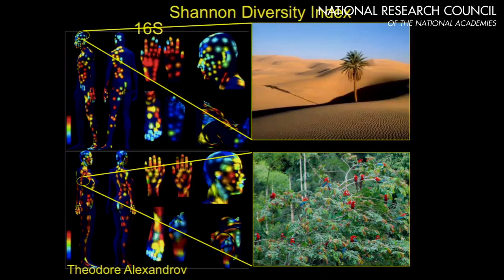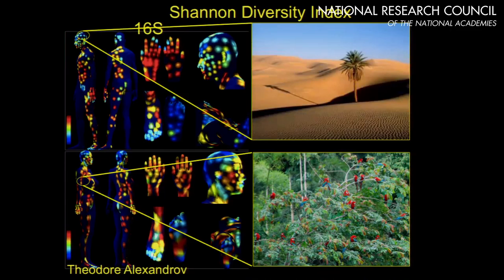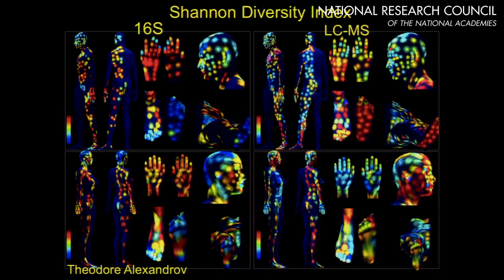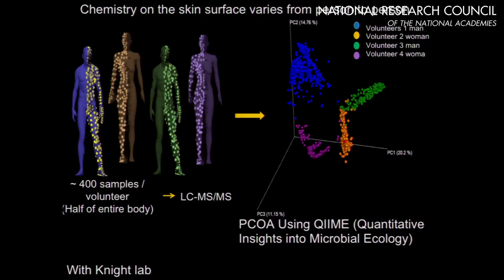We calculated the Shannon Diversity Index and found a low diversity of organisms on the head, groin, and foot region — this is your desert of the body, while other regions are the Amazon of your body due to higher diversity. When we apply the same calculation to mass spec data, there's a high diversity of molecules on the foot but low diversity of microbes on the foot. There is no correlation between the diversity of molecules versus diversity of organisms, meaning the majority of the chemistry seen on the skin is probably not microbially driven.